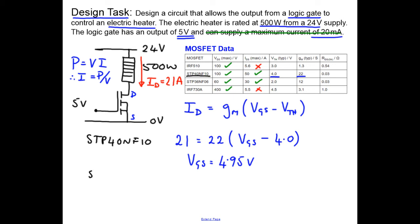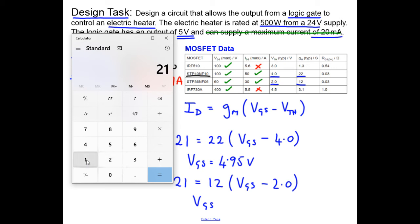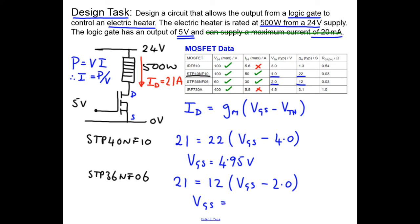Let's have a look at the other one, which is the STP36NF06, and we'll apply the MOSFET equation in exactly the same way to that MOSFET. So 21, the required drain current, equals the transconductance, which in this case is 12, so it's a lot lower transconductance, times VGS minus the threshold voltage, which is also crucially much lower. So we do 21 divided by 12 this time. That's 1.75. Add on the 2 volts of threshold voltage and that's 3.75. So here we have a gate source voltage of 3.75 volts.